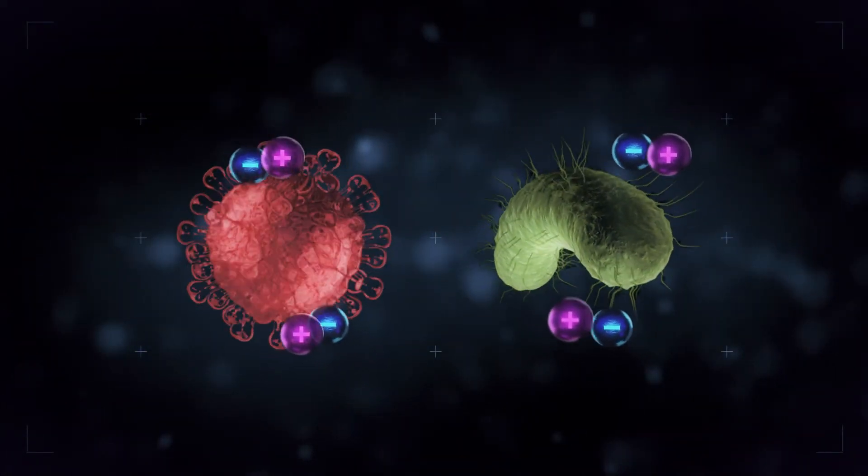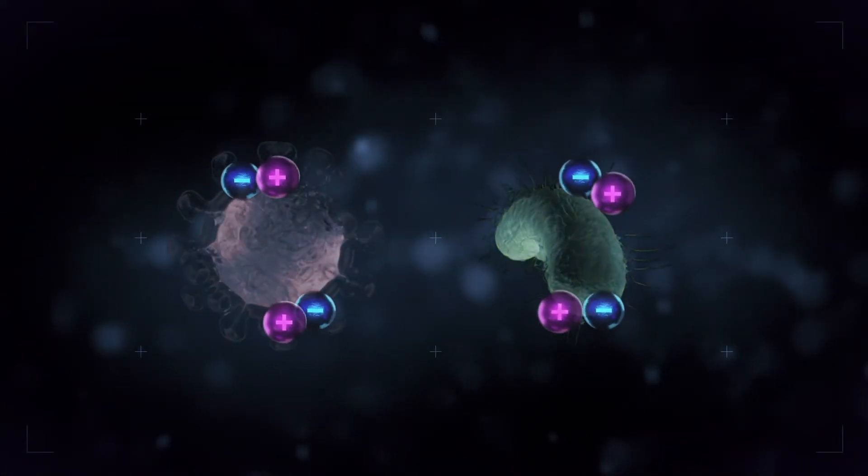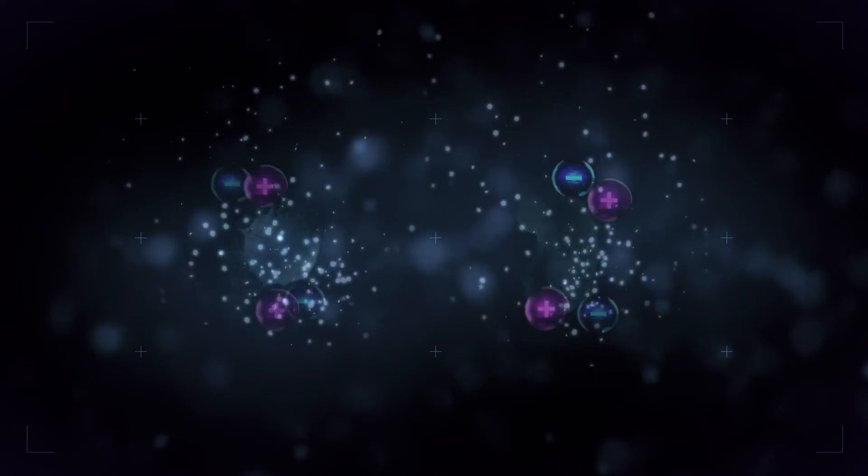On viruses and bacteria, the ions will draw out the contaminant's vital hydrogen bond, effectively killing it and stopping reproduction.